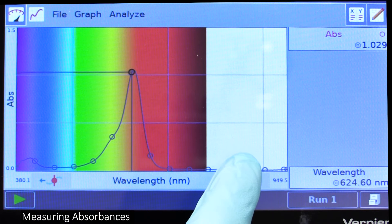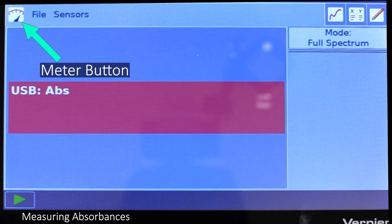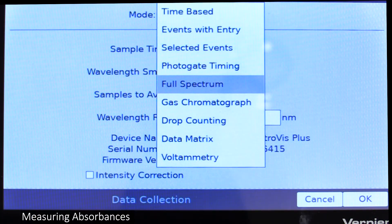What you want to do here is select the wavelength your solution absorbs best at. Once you've made your selection, click on the meter button to go back to the meter screen, then select mode and change the mode to events with entry.